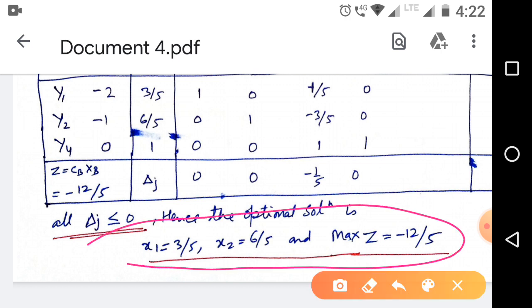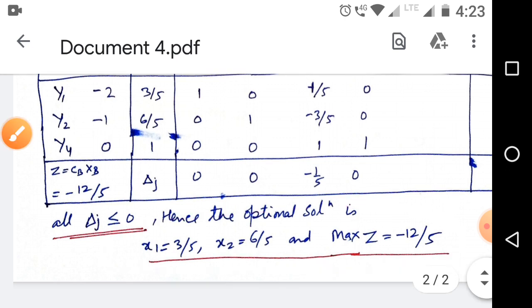Therefore we get an optimal solution. Maximum Z is minus 12/5, x1 is 3/5, x2 is 6/5. So that's all about the big M method, big M simplex method for artificial variables.